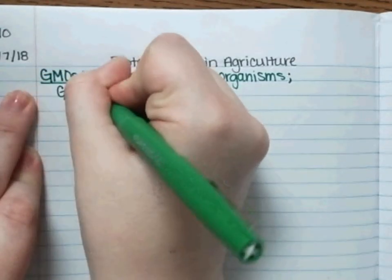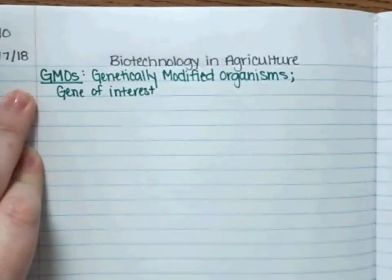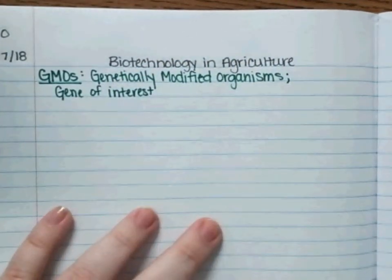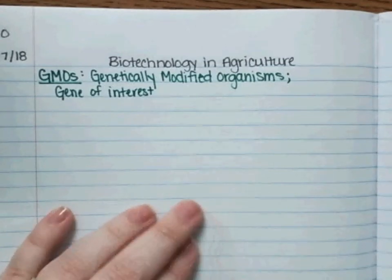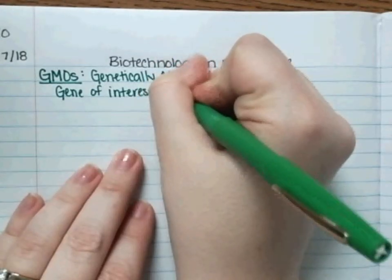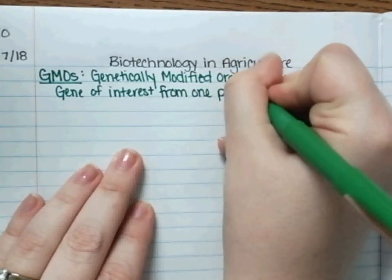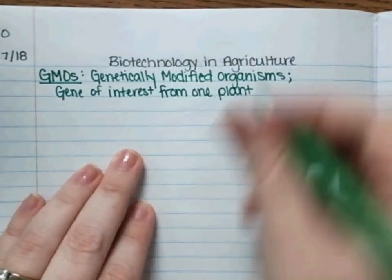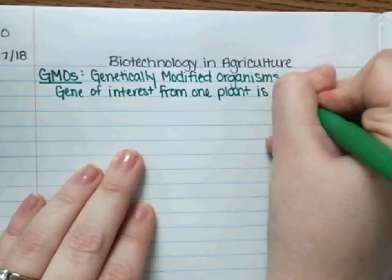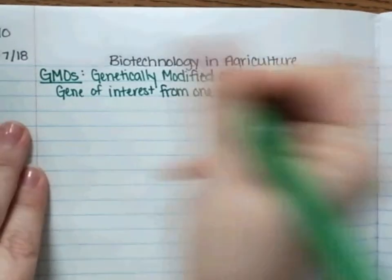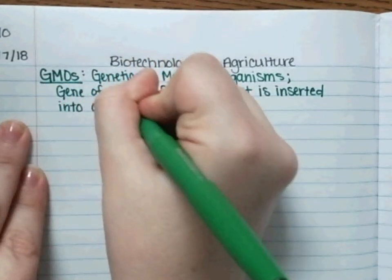The way a GMO works is that the gene of interest — the segment of DNA that codes for whatever trait or protein we're interested in — is taken from one plant and inserted into a different plant species.